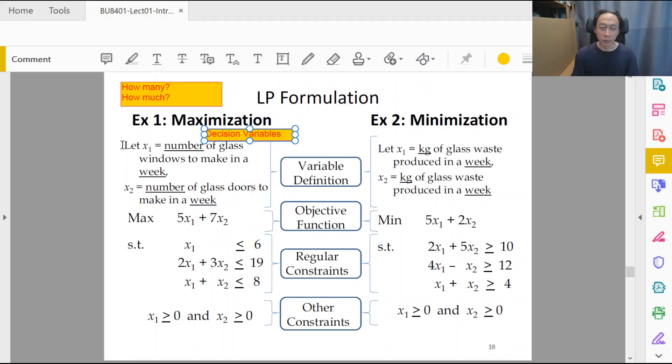Almost like calculus, almost like algebra. Let x1 be equal to the number of glass windows to make in a week. Let x2 be the number of glass doors to make. It's kind of repetitive, but you have to say them clearly like that.